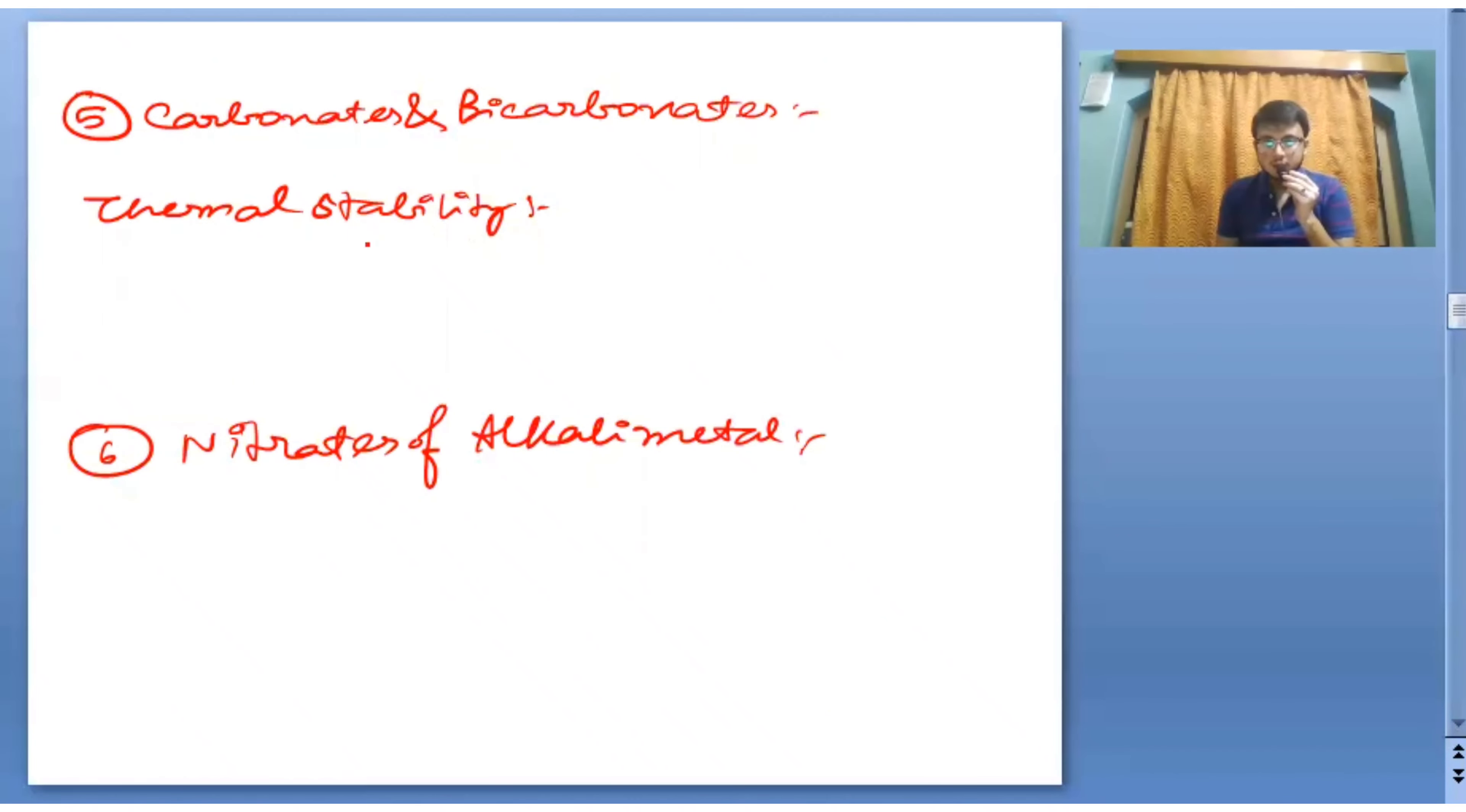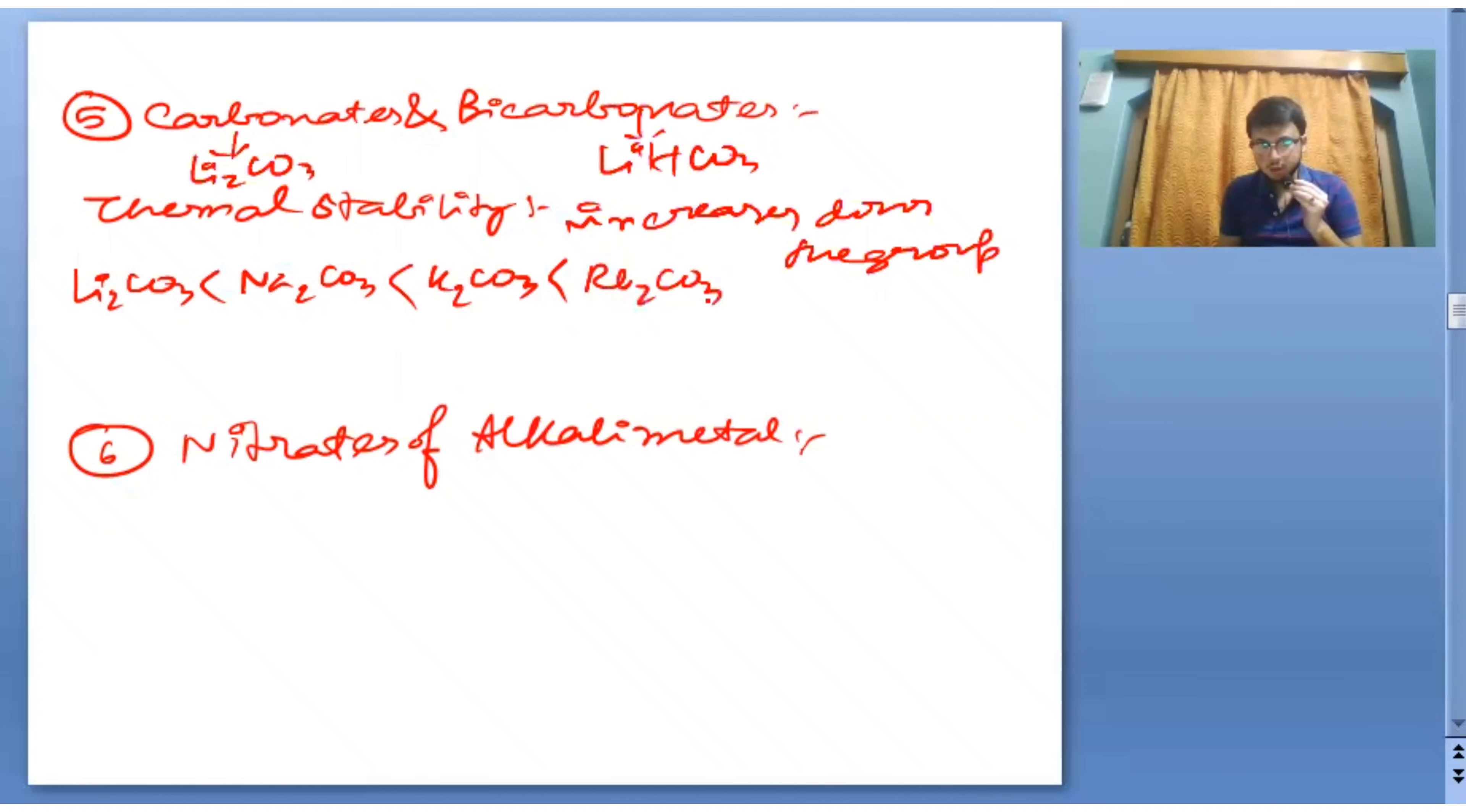Carbonates and bicarbonates: carbonates will be Li2CO3 and bicarbonates will be LiHCO3. Thermal stability order increases down the group. So the order is Li2CO3 is less than Na2CO3 less than K2CO3 less than Rb2CO3 less than Cs2CO3.